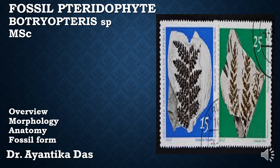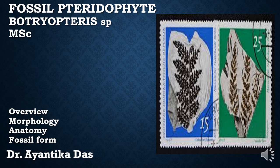Botryopteris is a fossil pteridophyte. The fossil of this fern was found in the upper carbonaceous deposits — the coal swamp deposits across various regions of the world. Various organ fragments of Botryopteris were used to reconstruct the entire plant, and it was found that this fern was a very small fern — a coenopterid fern — in contrast to the ferns of Maratiales, which were large tree ferns.